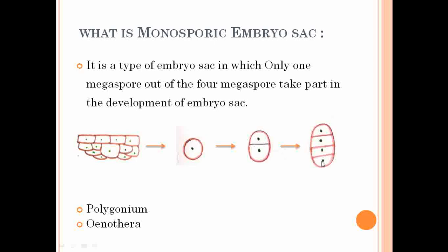In the monosporic type of embryo sac, three cells present at the micropylar end or the three cells at the chalazal end degenerate, and only a single cell present either at the micropylar end or at the chalazal end becomes functional and undergoes further nuclear division to form the embryo sac. This is called the monosporic embryo sac.